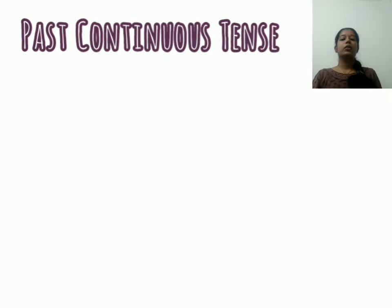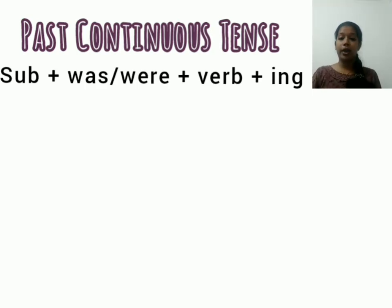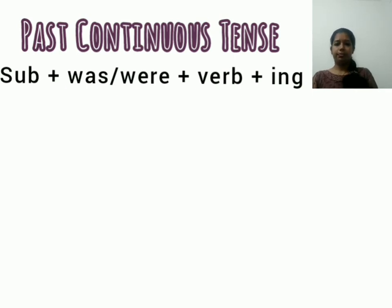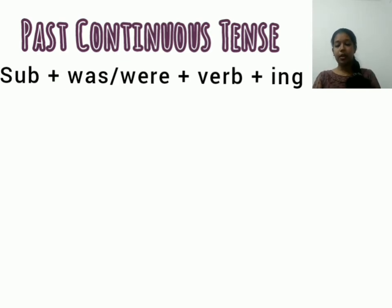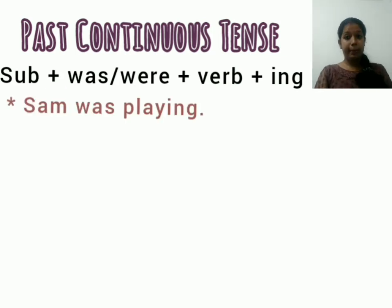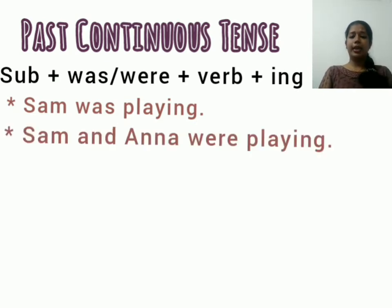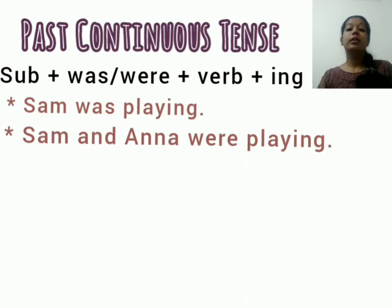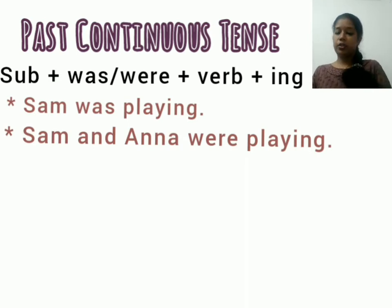The format of past continuous is: subject plus 'was' or 'were' plus the ING form of the verb. Use 'was' with a singular subject and 'were' with a plural subject. For example: 'Sam was playing' — Sam is a singular subject, so we use 'was' and the ING form 'playing.' 'Sam and Anna were playing' — two subjects, so we use 'were' plus the ING form of the verb.